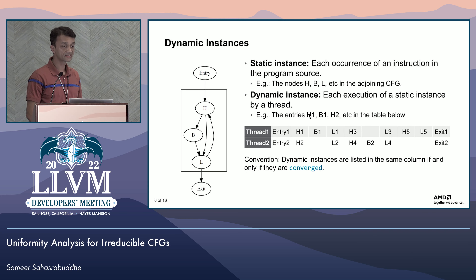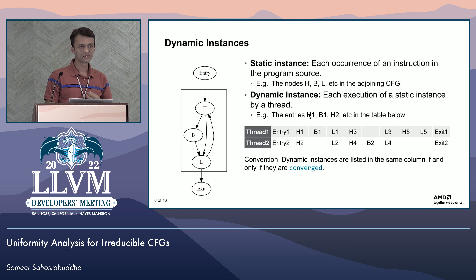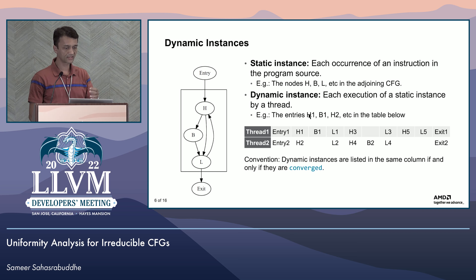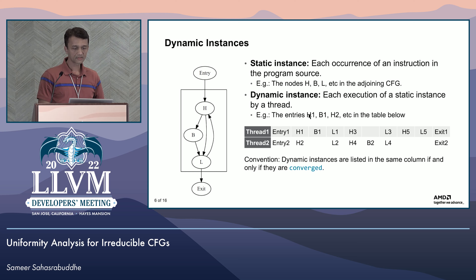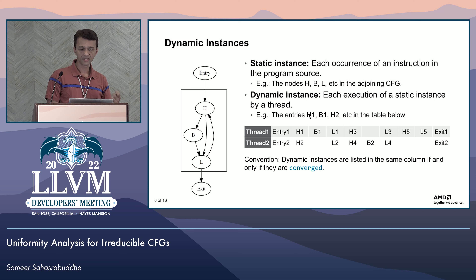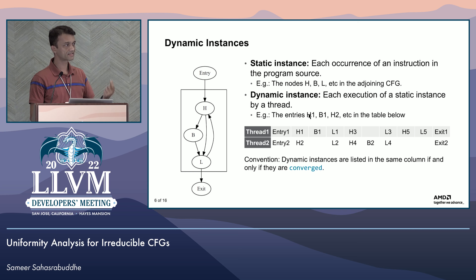We need the notion of dynamic instances to define what convergent execution means between threads. A static instance is an occurrence of an instruction in a program source — for example, if the CFG is a program, then H, B, L are different static instances of some instruction. A dynamic instance is each execution of a static instance; for example, H1, H2, H3 are all executions of the same node H, labeled differently because each is unique. In the table shown, each row is one thread executing the program, producing a sequence of dynamic instructions. Dynamic instances from different threads are listed in the same column if and only if they are converged, pending a definition of what converged means.